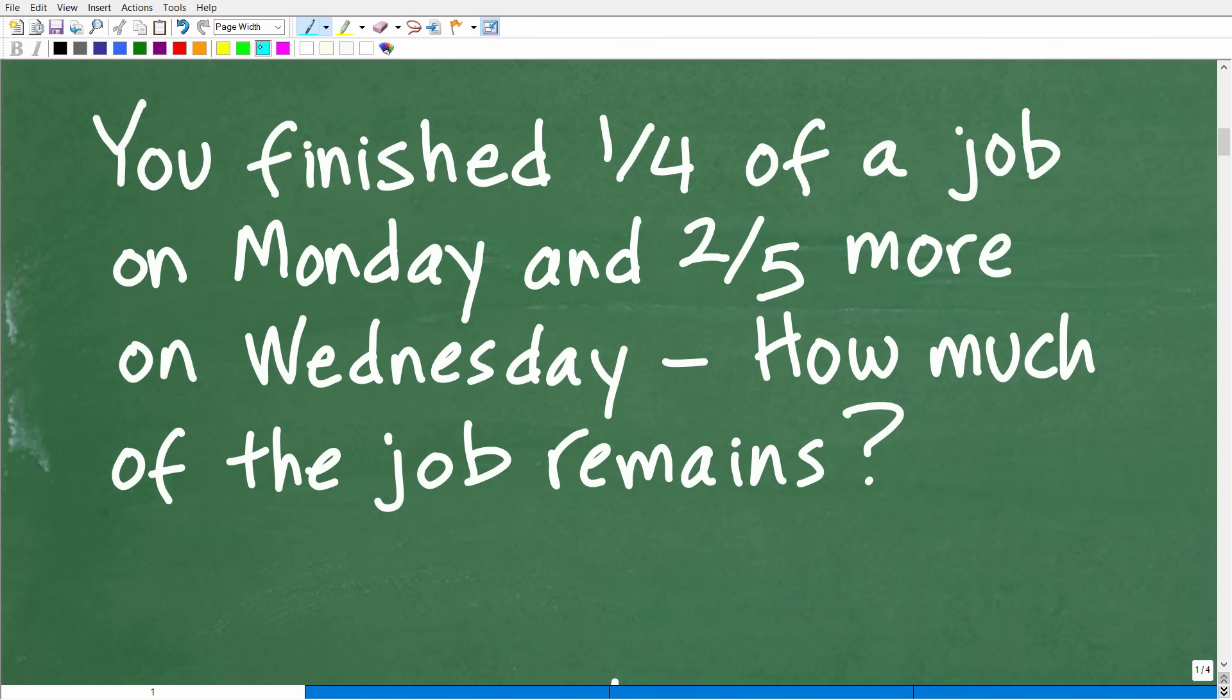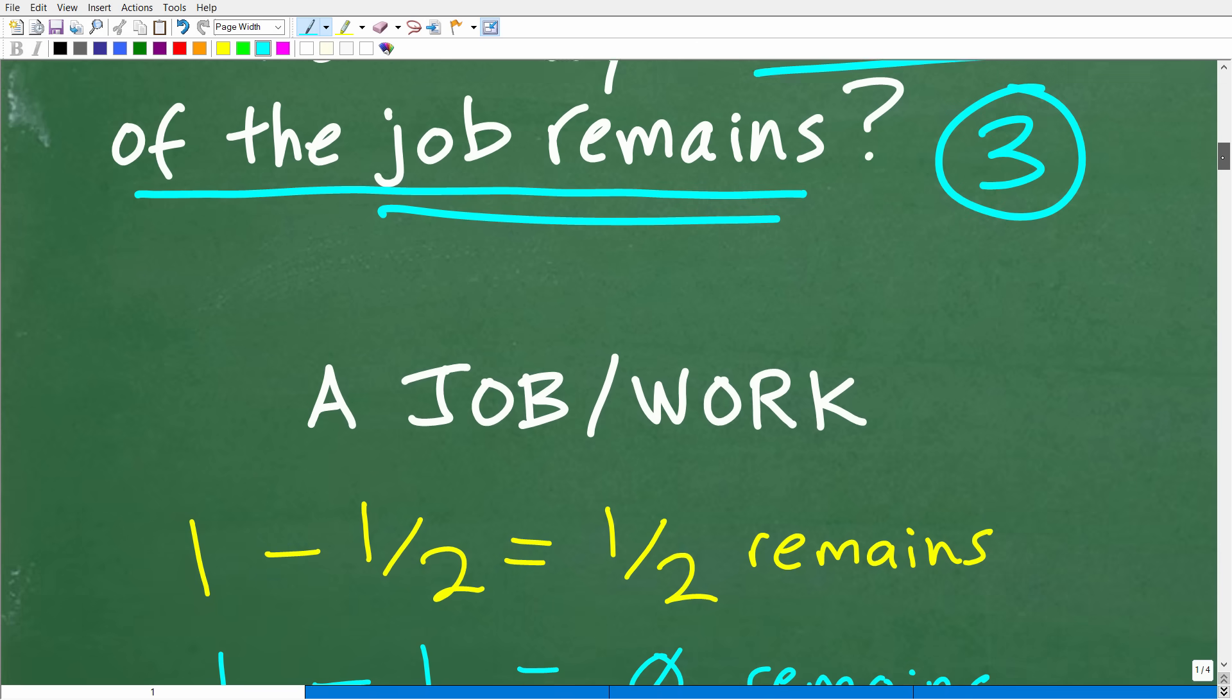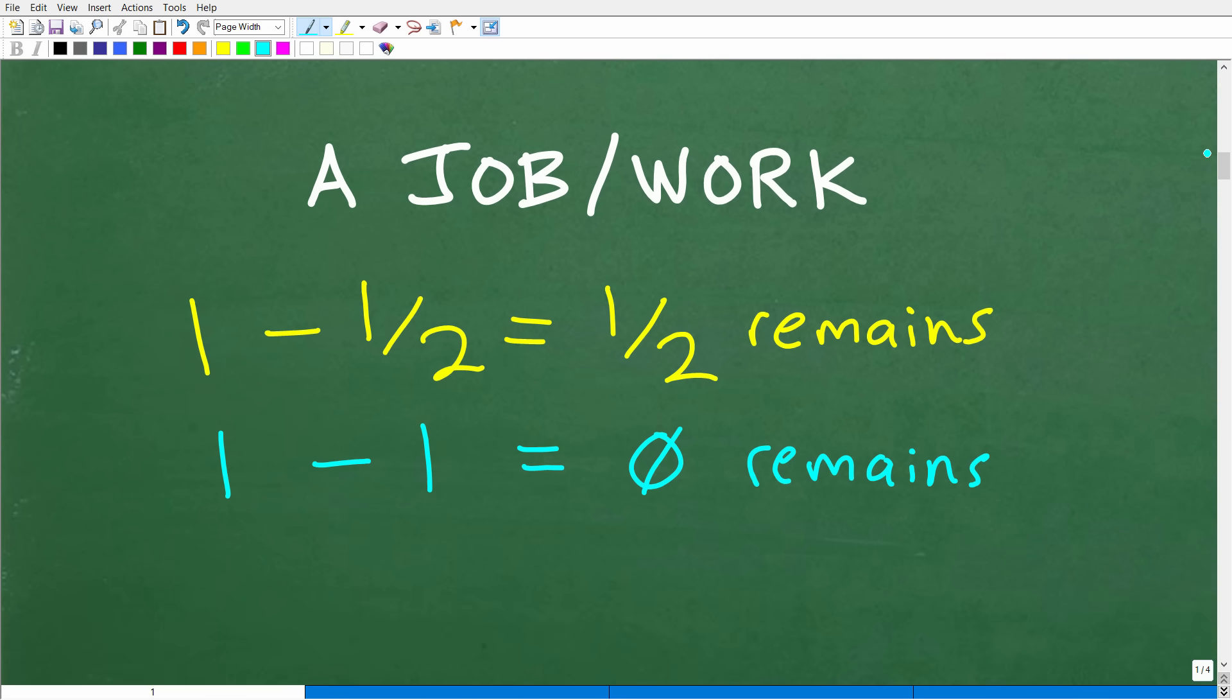All right, let's go ahead and get into this problem. And the first thing we will always want to do when we're dealing with any math work problem is to use the rule of three, which is to read the problem at least three times before you do anything. And we want to make sure we understand the question. So the question is, how much of the job remains? And obviously, we did some amount of work, one-fourth of this work on a particular job on Monday. And then on Wednesday, we did two-fifths more. So how much of this job remains? Well, we need to understand a job or work, the concept of a job or work, full work, a full amount of work in mathematics. Let's go and take a look at this right now because this could confuse some people. But it's not that difficult.